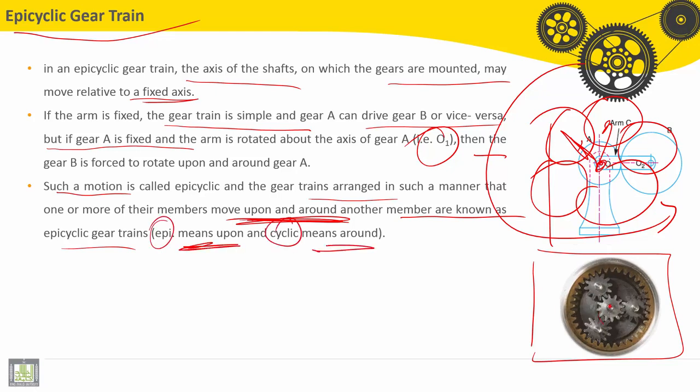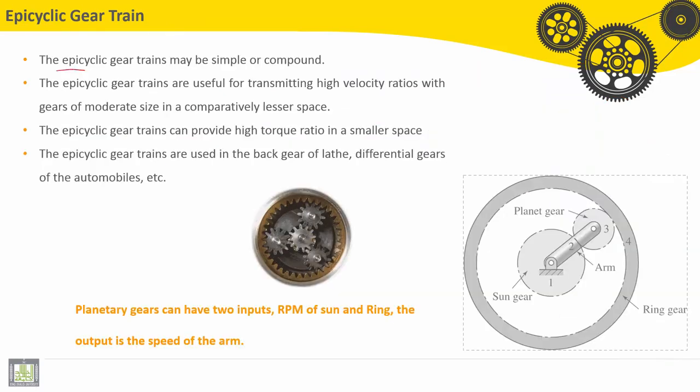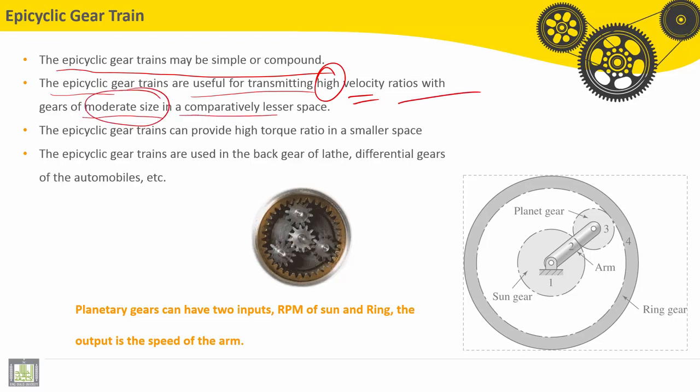The epicyclic gear trains may be simple or compound. They are useful for transmitting high velocity ratios with gears of moderate size in a comparatively lesser space. The epicyclic gear trains can provide high torque ratio in a smaller space.